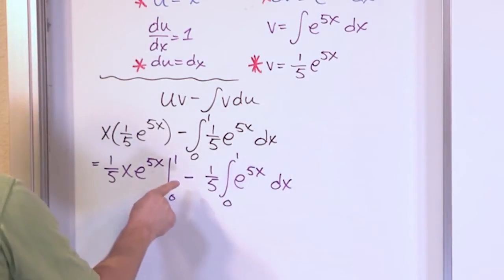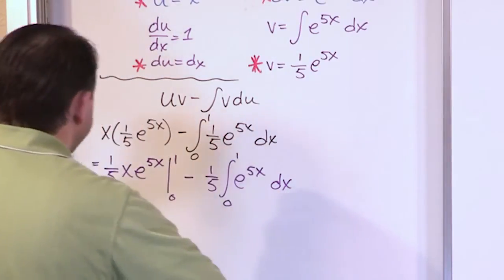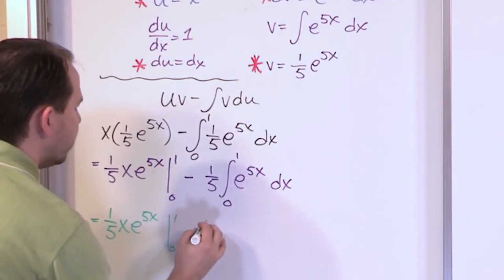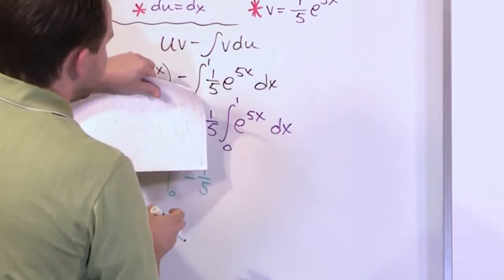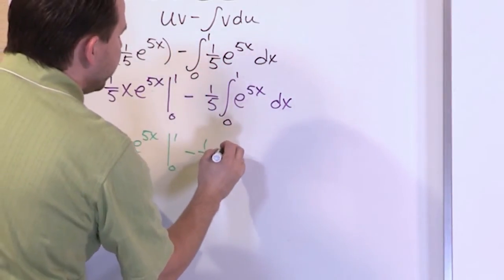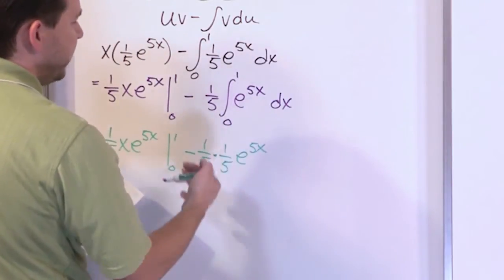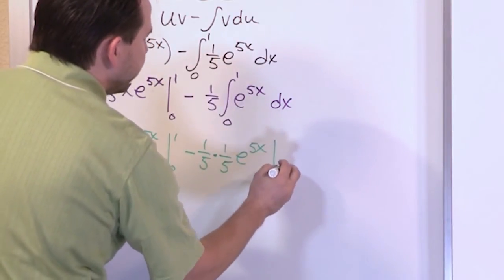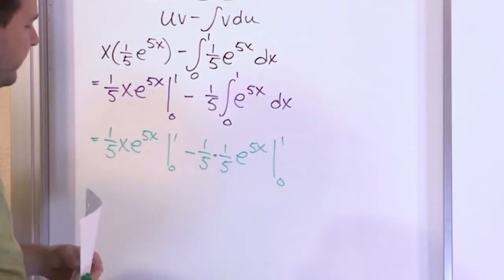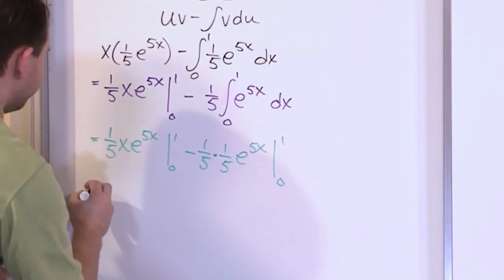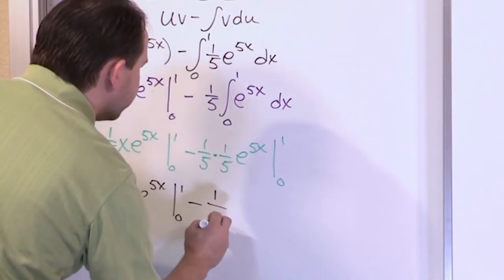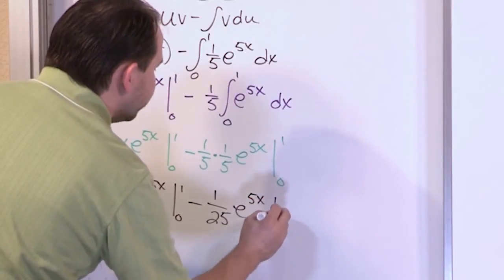Rather than evaluating now, let's get the entire expression first. We have (1/5)·x·e^(5x) evaluated from 0 to 1, minus (1/5) times the integral of e^(5x) dx from 0 to 1. Handling that integral: it's the same e^(5x) integral as before, so another 1/5 comes out, giving us (1/25)·e^(5x), evaluated from 0 to 1. So the full expression is (1/5)·x·e^(5x) from 0 to 1, minus (1/25)·e^(5x) from 0 to 1.